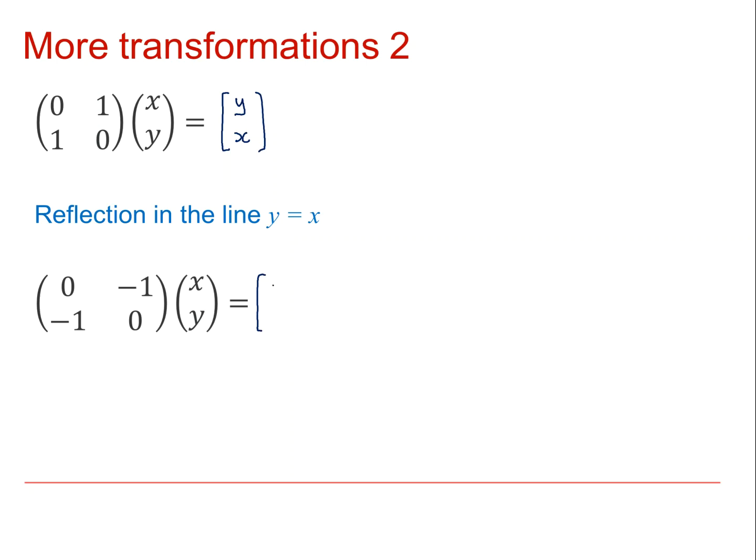OK, this maps the point x, y onto the point minus y minus x. If we look at our general point x, y, the new x coordinate is minus the old y coordinate. The y coordinate is minus the old x coordinate. So we have a reflection in the line y equals minus x.